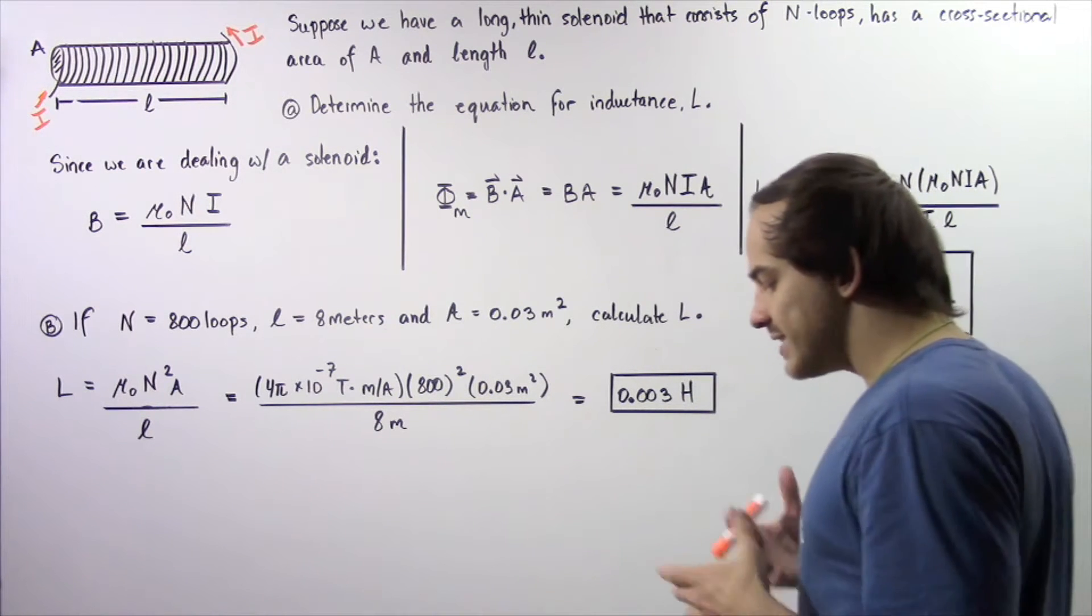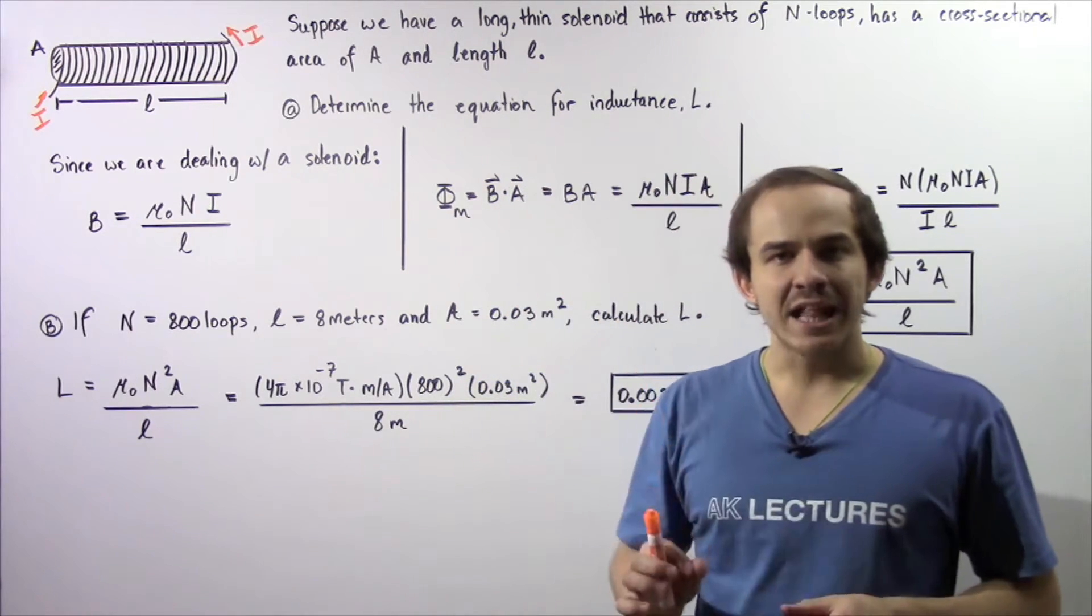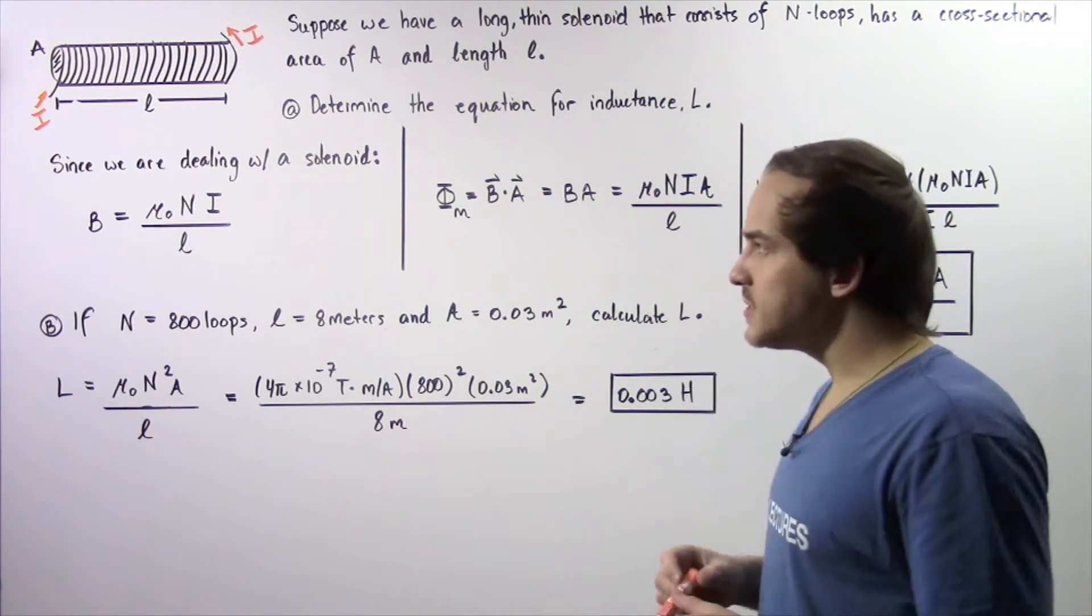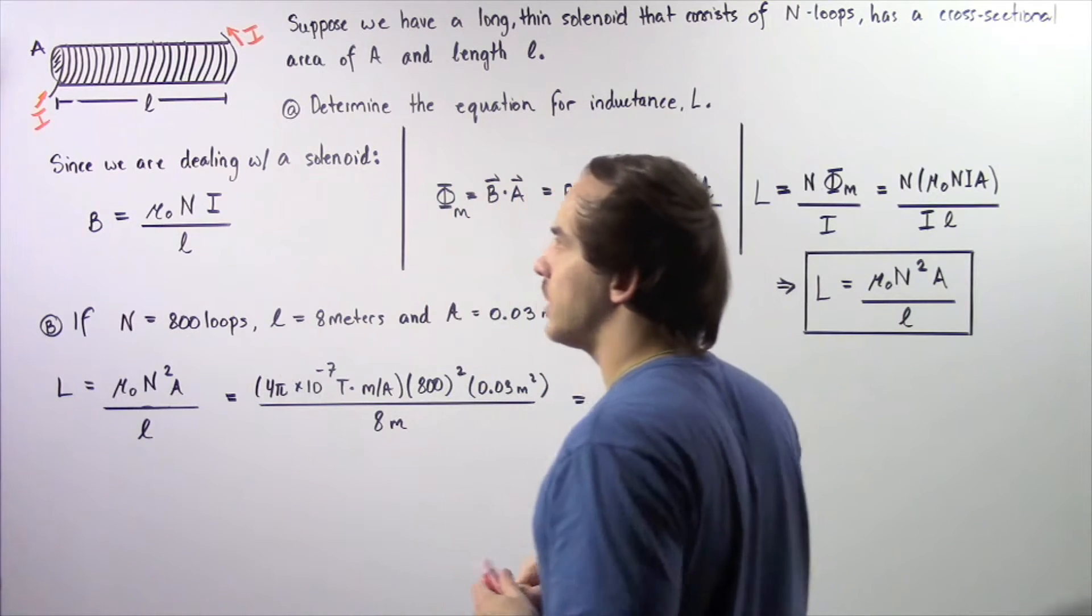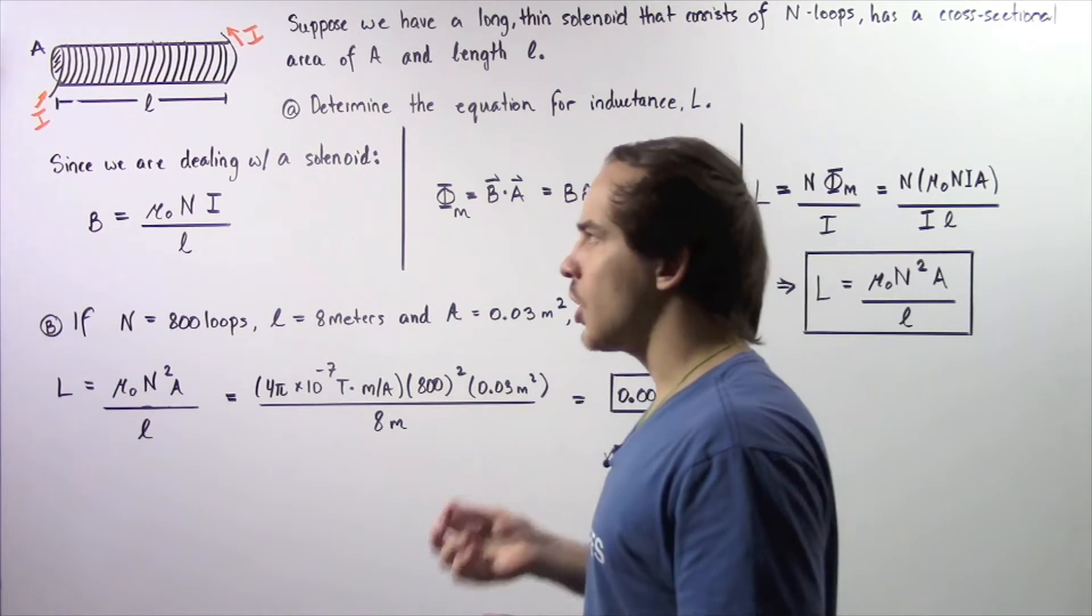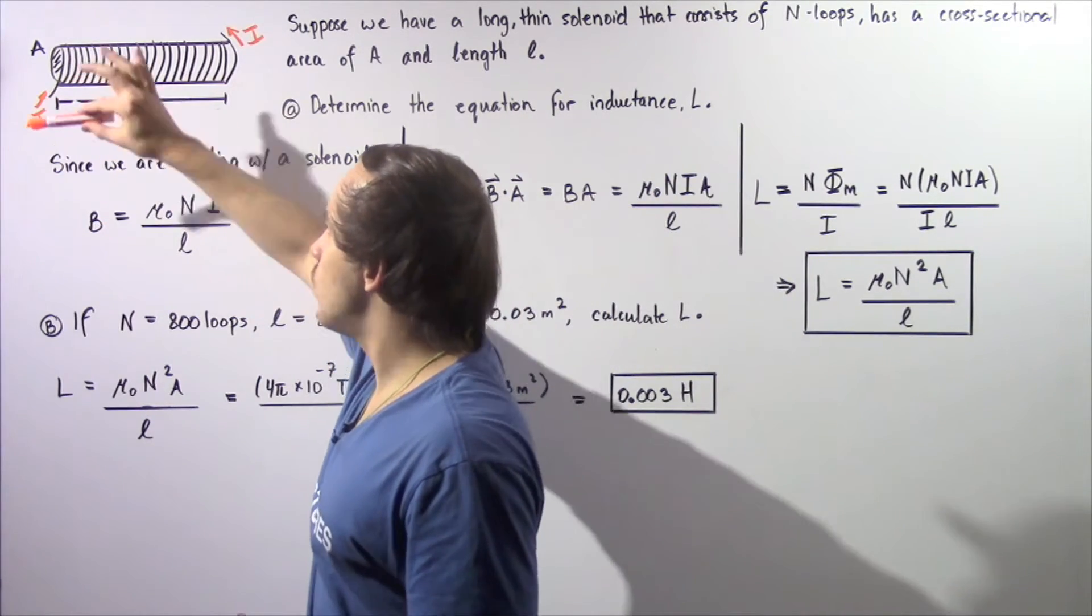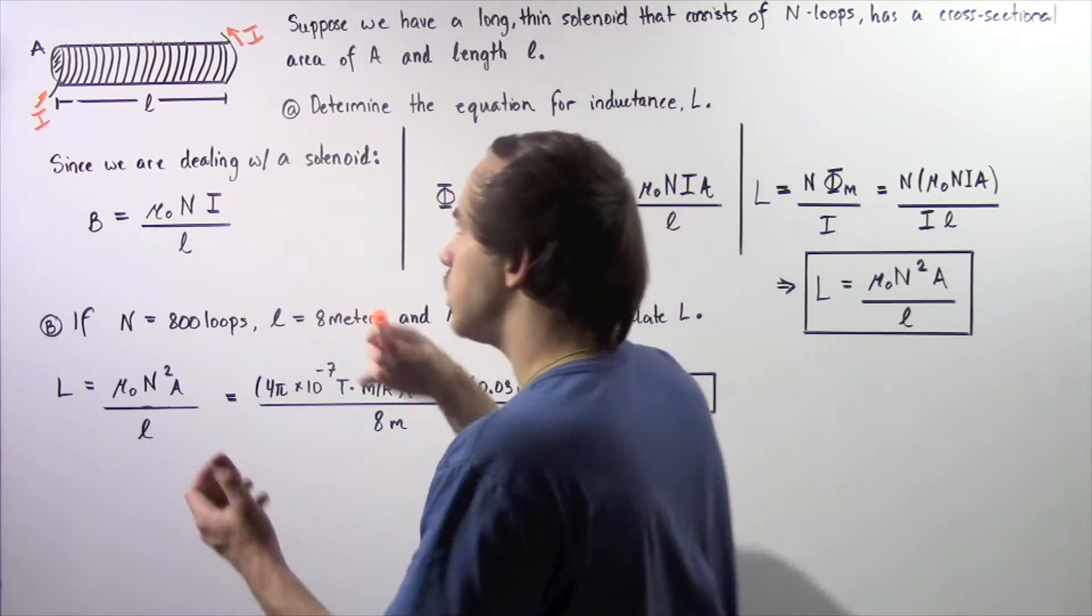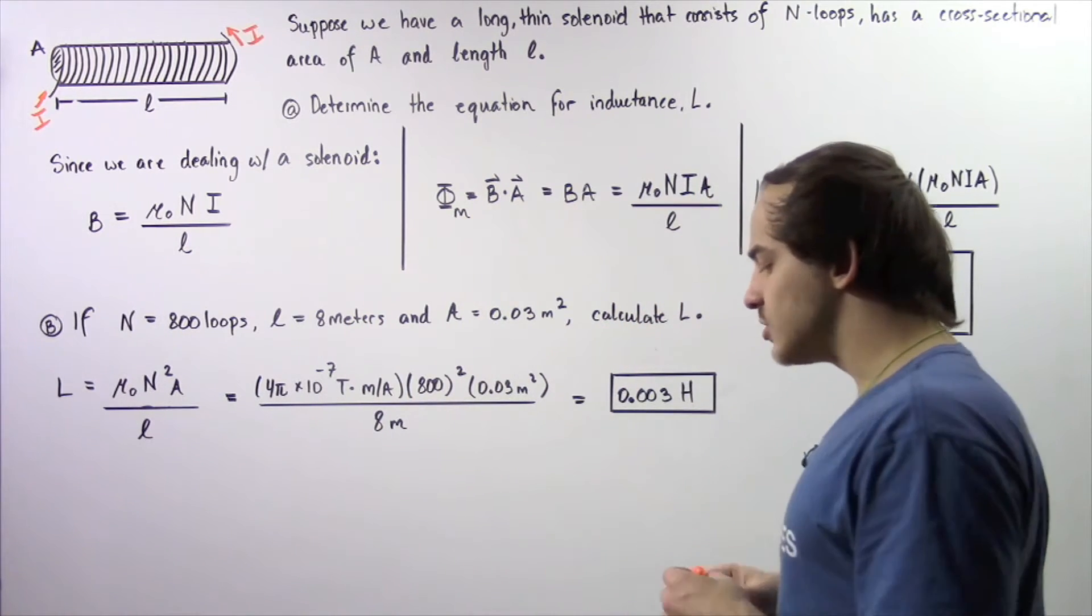So in part A, we want to determine the equation for the self-inductance L of the following solenoid. Let's begin by describing what is taking place within our solenoid. We have a certain alternating electric current, a changing electric current given by I, which is traveling through these loops of wire, which are packed very closely with respect to one another.